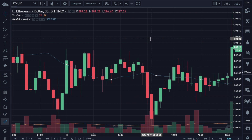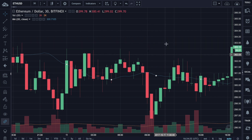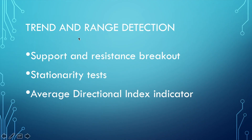Our today's optimization goal is to figure out how to avoid trading in periods when price moves in the range. There are several options to detect trend and range: support and resistance breakout, stationarity test, and average directional index indicator. In my opinion, the first two options are more reliable but more difficult to implement, and the last one is less reliable but very easy to understand and implement. Let's look at these options in detail.